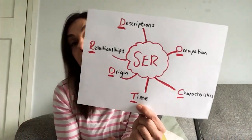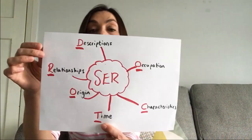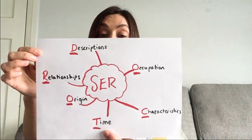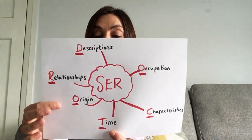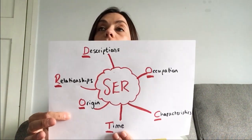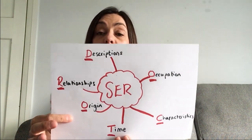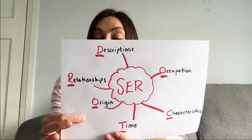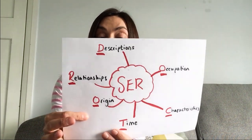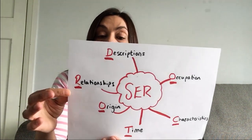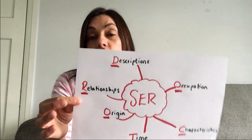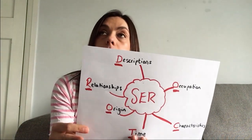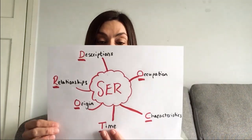Time — if you're telling the time, so 'it is four o'clock,' you would always use ser for that. Origin — where you're from, your nationality, 'she is from Spain' or 'he is from England.' Relationships — the relationship between people, 'we are friends,' 'they are sisters,' etc.